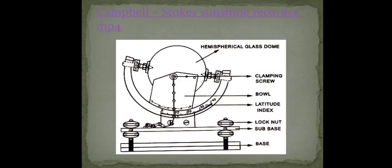This is how the instrument looks. A round glass sphere is on top, below that a hemispherical bowl, below that a frame, and below that the base. The glass sphere converges all the light into the hemispherical bowl where sunshine cards are kept. There will be three different cards and three different slots to hold them. When the instrument receives light it focuses on the card, the card starts burning, and you can measure it and express it in hours.